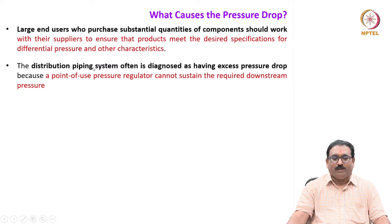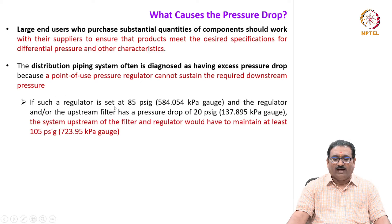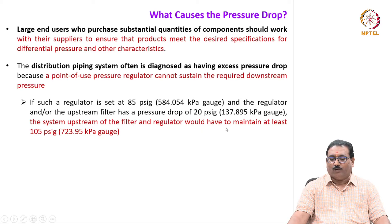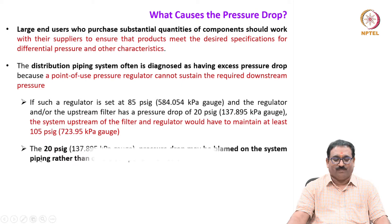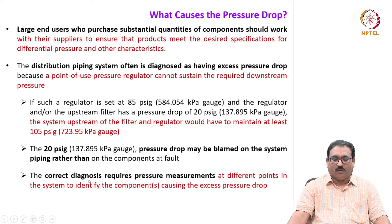The distribution piping system is often diagnosed as having excessive pressure drop because a point-of-use pressure regulator cannot sustain the required downstream pressure. If such a regulator is set at 85 PSIG and the regulator or the upstream filter has a pressure drop of 20 PSIG, the system upstream of the filter and regulator would have to maintain at least 105 PSIG. The 20 PSIG pressure drop may be blamed on the system piping rather than on the components at fault. Correct diagnosis requires pressure measurement at different points in the system to identify the component causing the excessive pressure drop.